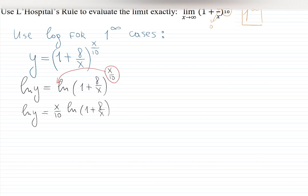Then we are going to have ln of y equals x over 10 ln of 1 plus 8 over x. Now we're going to work with the function on the right-hand side when we're looking for limits. So we are going to find a limit of x over 10 natural log 1 plus 8 over x. Well, it looks a little bit better. x approaches infinity.